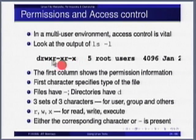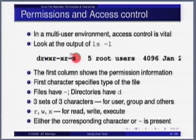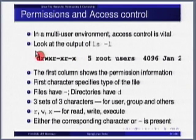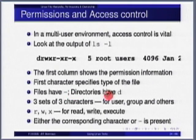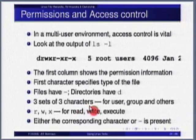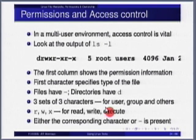What do these nine characters mean? The first three mean something — the next three mean the same thing but for a different person, and the last three mean the same thing for a third group. r, w, x in short stands for read, write and execute. Read is permission to read, write is permission to write, execute means can you execute it as a command. If it is a directory, the directory has to have execute permission because you have to be able to go into that directory and type other commands.